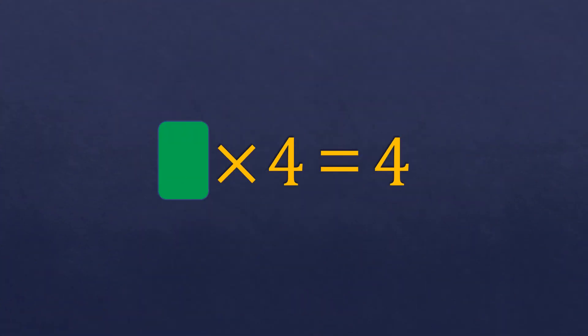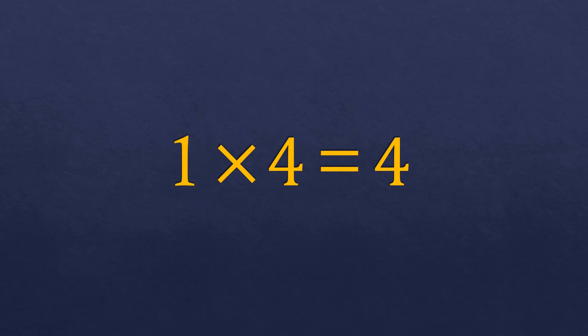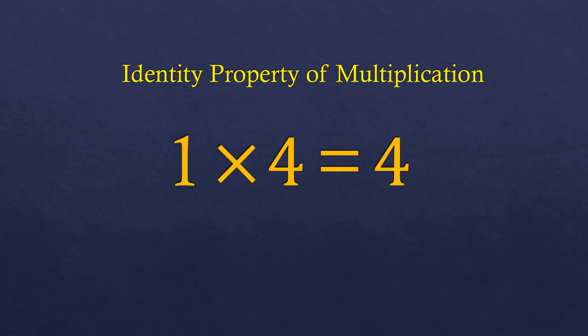We have: blank times 4 equals 4, meaning a number multiplied by something gives itself. Is it 0? No, because 0 times 4 is 0, not 4. So it must be 1, since 1 times 4 equals 4. That is according to the identity property of multiplication.